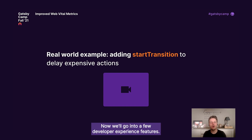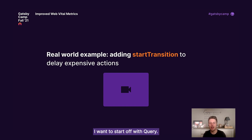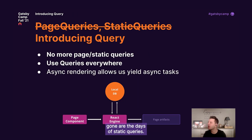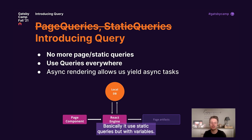Now we'll go into a few developer experience features. I want to start off with the query hook. Gone are the days of page queries. Gone are the days of static queries. Let's introduce something new called useQuery — basically, it's like static queries but with variables.